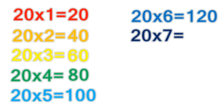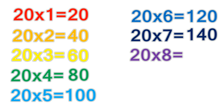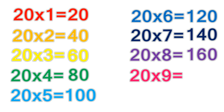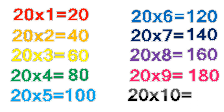20 times 7 equals 140. 20 times 8 equals 160. 20 times 9 equals 180. 20 times 10 equals 200.